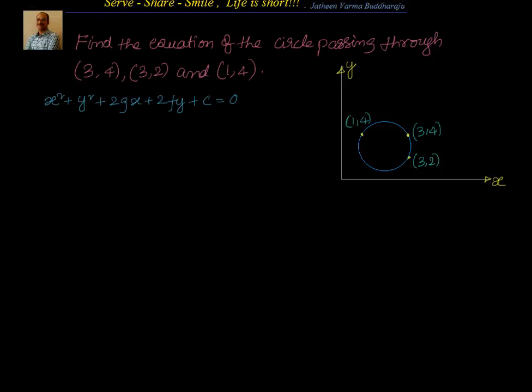Hello friends, welcome back. In this session let's look at how to find out the equation of the circle if we have been given 3 points. In the example we have been given coordinates of 3 points through which the circle is passing: the points are (3,4), (3,2) and (1,4). We have to find the equation of the circle passing through these 3 points. To solve this problem we have 3 methods.